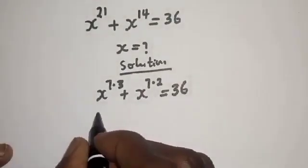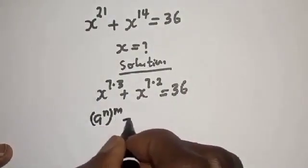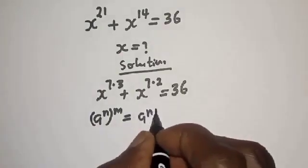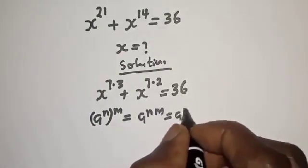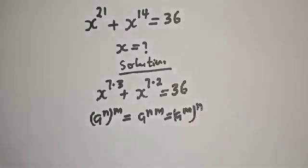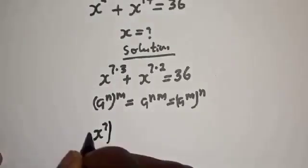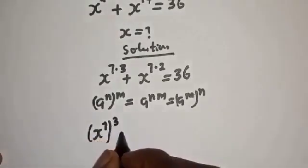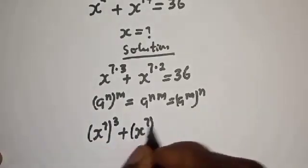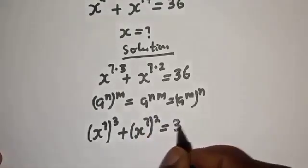Take note of this exponential rule: if you have a raised to power n, to the power of m, this is equal to a raised to power n×m. Applying this, the expression becomes s raised to power 7 to the power of 3, plus s to power 7 squared, is equal to 36.